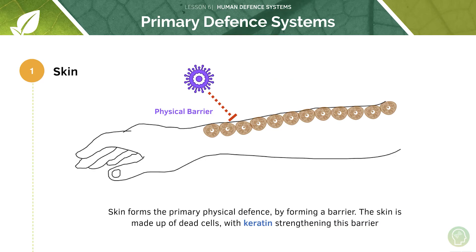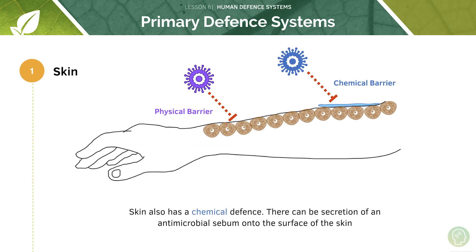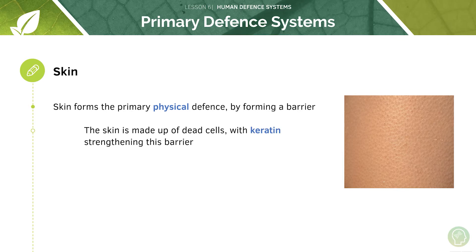The skin is a physical defence because it forms a physical barrier between the pathogen and the internal environment of the person. The skin is made up of dead cells with keratin strengthening this barrier, making it fairly impenetrable. In addition, the skin also forms a chemical barrier due to the secretion of an antimicrobial sebum onto the surface of the skin. So the skin forms the primary physical defence in two ways: a physical barrier provided by the layer of dead skin cells, and also a chemical barrier.